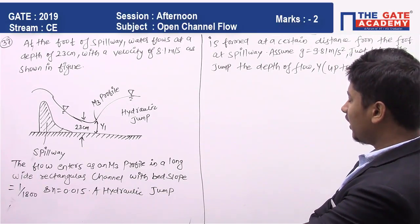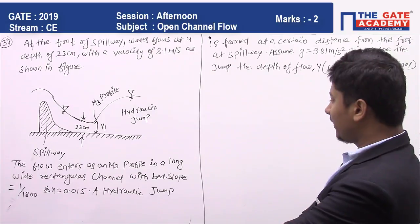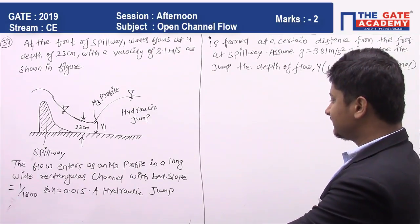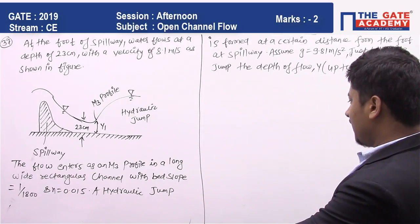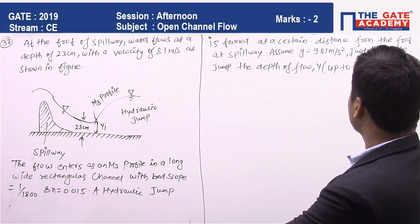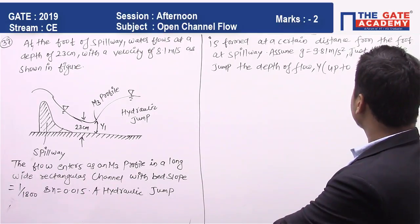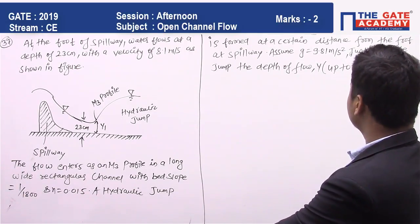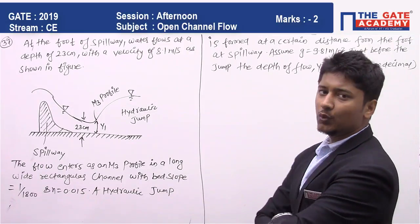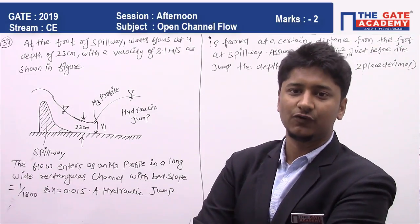The flow enters as an M3 profile in a long wide rectangular channel with bed slope 1 by 1800 and Manning's roughness coefficient n = 0.015. A hydraulic jump is formed at a certain distance from the foot of the spillway. Assume g = 9.81 m/s².